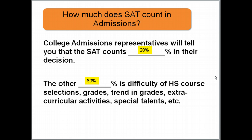How much does your SAT count in admission? College representatives will tell you it's about 20% of their decision. The remaining 80% includes: difficulty of your courses, your grades, the trend of grades from 9th through 11th grade, extracurricular activities, and special talents — that's the larger part of their decision.